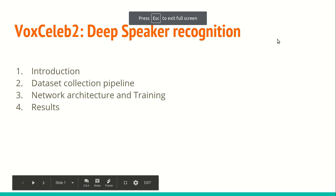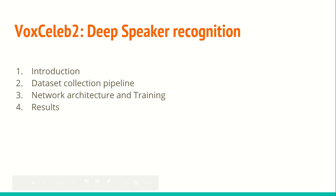Hello everyone. Today I will explain the paper VoxCeleb2: Deep Speaker Recognition. This paper is actually the second version of an older paper called VoxCeleb1, which was released in 2016. And this paper is the second version of that paper. It was released in 2018, a few months ago. This paper is a database paper and has more data compared to the VoxCeleb1 data.